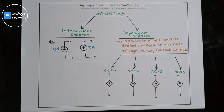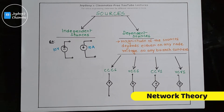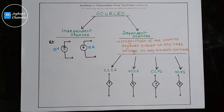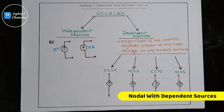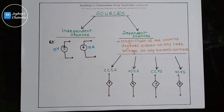Before we start solving the questions, we will understand what is a dependent source and its types. Sources can basically be classified into two parts: independent sources and dependent sources. Independent sources mean that the magnitude of these sources doesn't depend on any other parameters in the circuit — that is, any node voltage or any branch current.